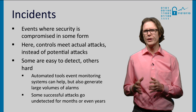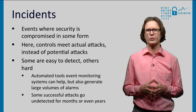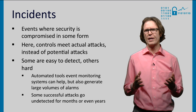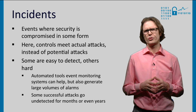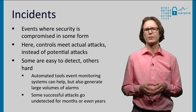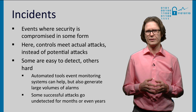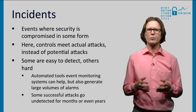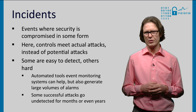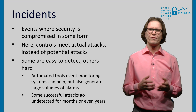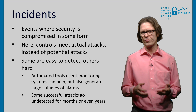Incidents are where the controls meet the real threat environment. Here, actual attacks occur, which may or may not be successful or costly to the organization. Information security controls are imperfect in various ways — they can be poorly implemented or fail in unexpected ways. Incidents shed light on the state of the controls, which you might not otherwise learn about. We can detect these incidents through many different means, with varying levels of detail and fidelity. Some are easy to detect, others hard. Automated tools like event monitoring systems can help, but they typically also generate large volumes of false alarms that have to be processed and analyzed. More advanced attacks are typically harder to detect. Even with controls in place, some successful attacks have gone undetected for months or even years.